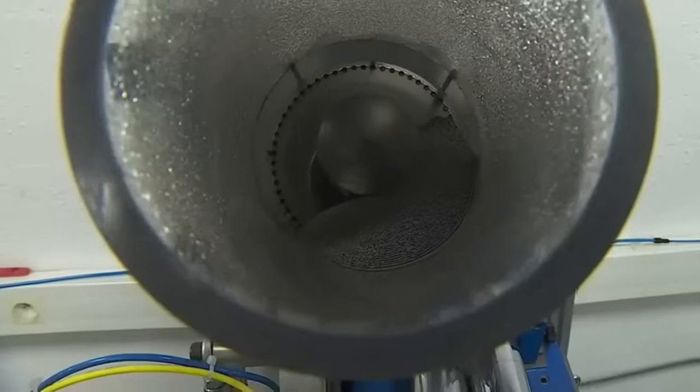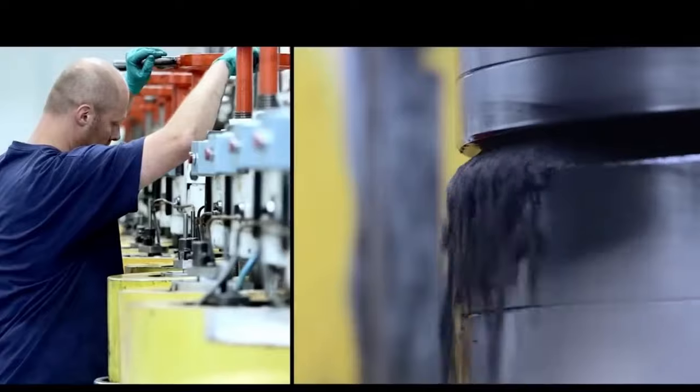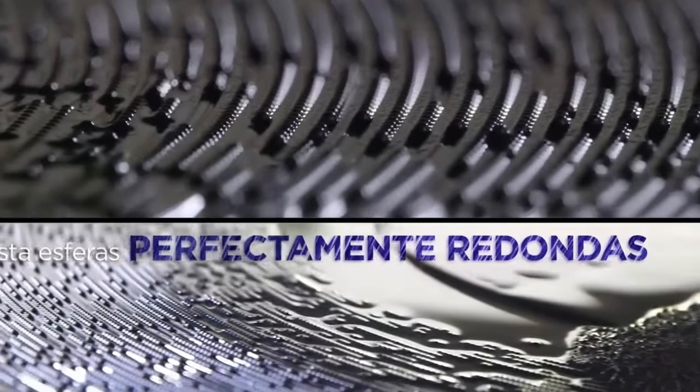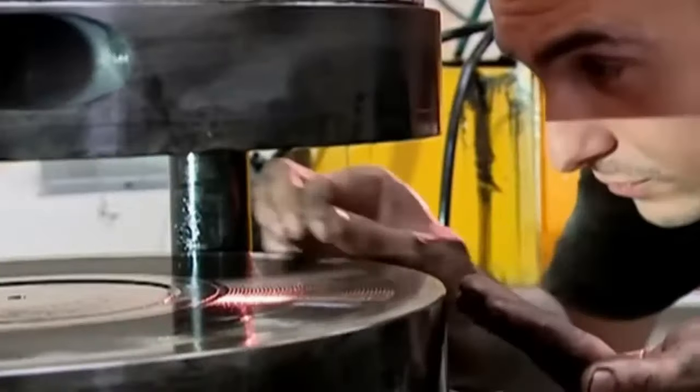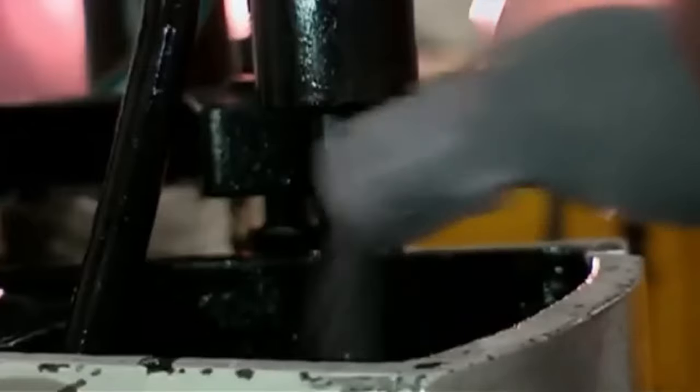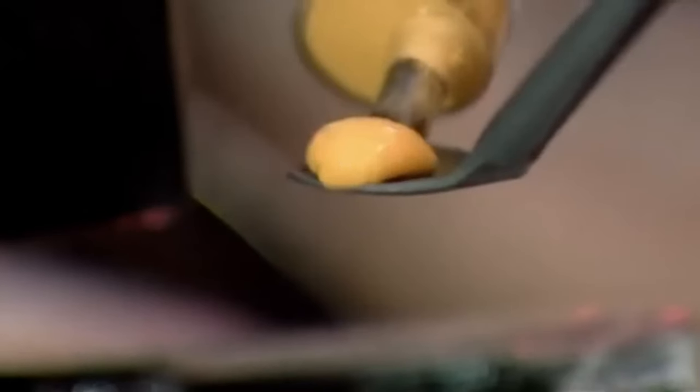The tiny tungsten carbide balls are manufactured by subjecting fine powder to heat and immense pressure in a machine called a compressor. However, after this process, the balls are neither smooth nor perfectly spherical. To achieve the necessary dimensions and geometries, the balls are put into a polisher, a rotating drum where they're combined with lubricating oil and a paste made of diamond powder.